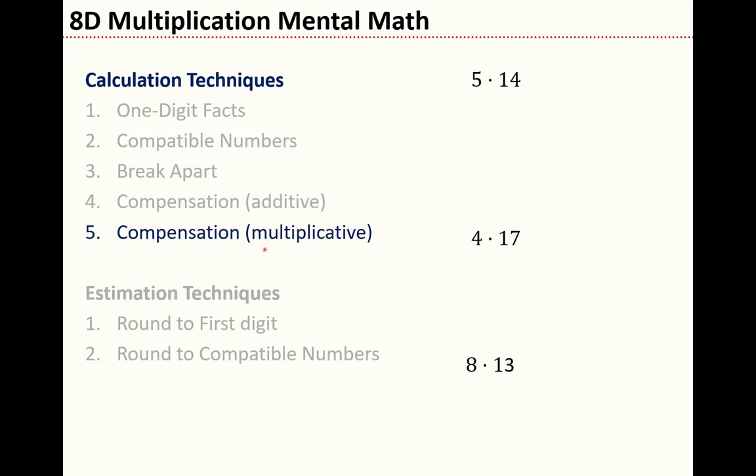How about multiplicative compensation? In this case, I'm going to multiply one number by something and divide the other number by that same thing. So for example, 5 and 14. Let's take the 5 and multiply by 2 to get 10. Take the 14 and divide by 2 to get 7. This is an easier problem. It's easier because I'd rather multiply by 10 than multiply by 5.